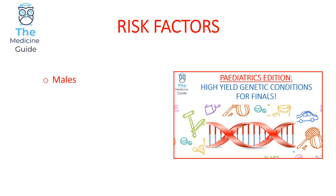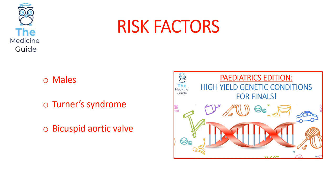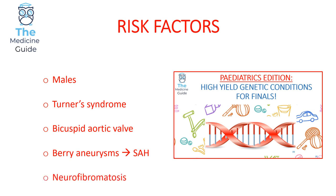Risk factors for aortic coarctation include: it is more common in males; Turner's syndrome, a condition affecting girls exclusively, is a major risk factor; a bicuspid aortic valve is also a risk factor. Berry aneurysms are a risk factor — if they rupture, this can lead to subarachnoid haemorrhage and ultimately haemorrhagic stroke, making them very concerning. Neurofibromatosis is another risk factor.